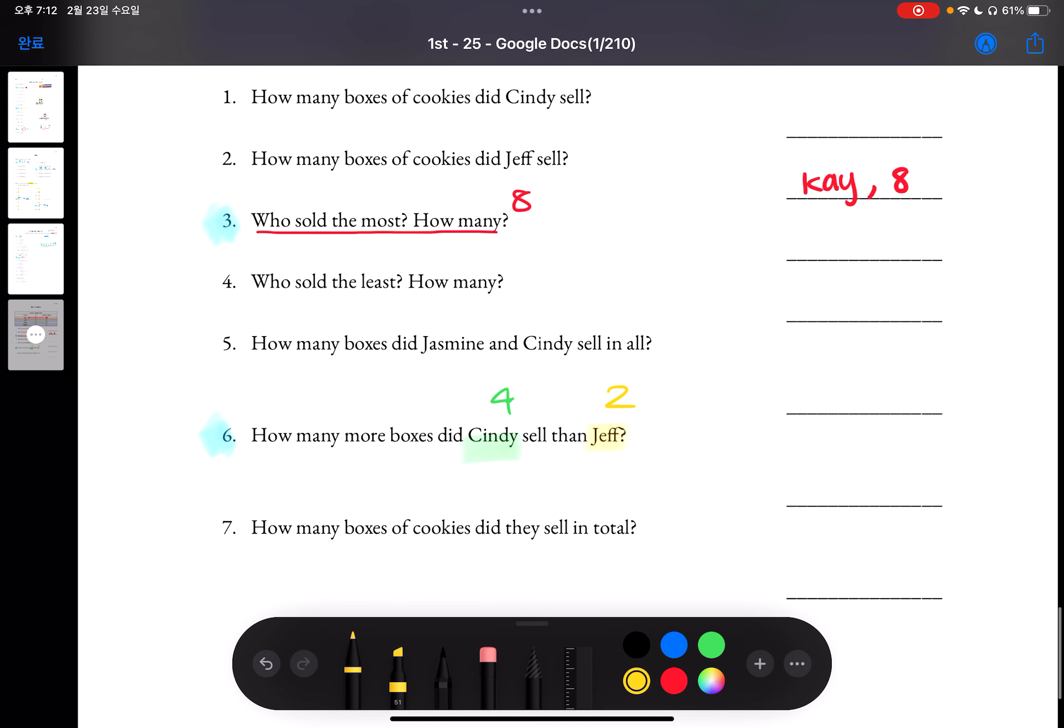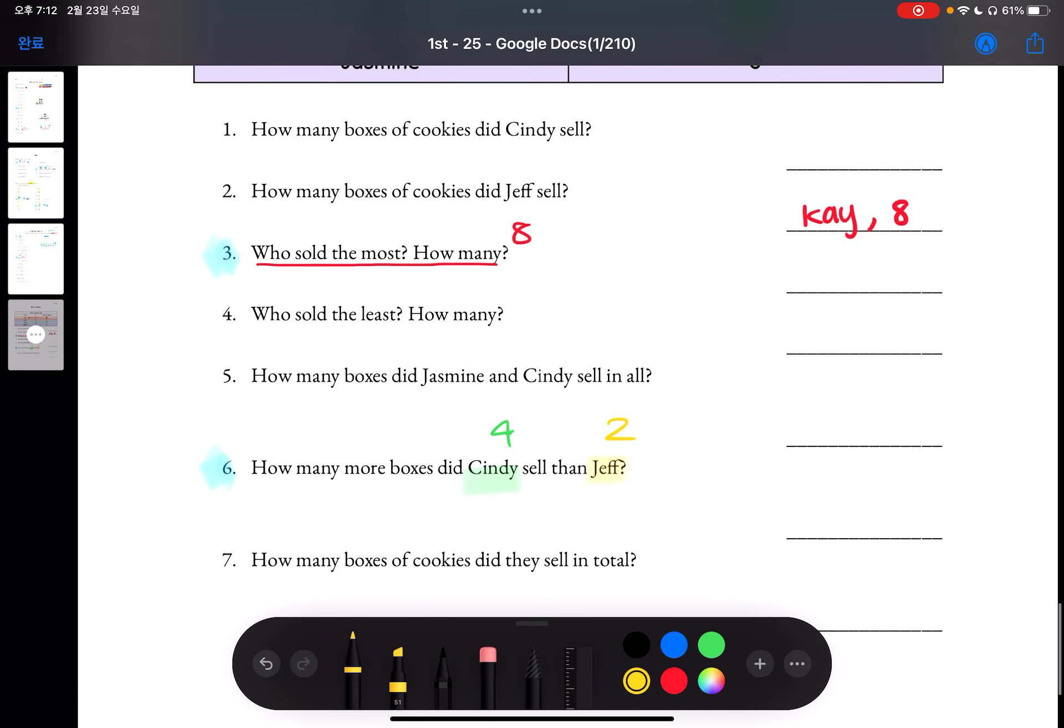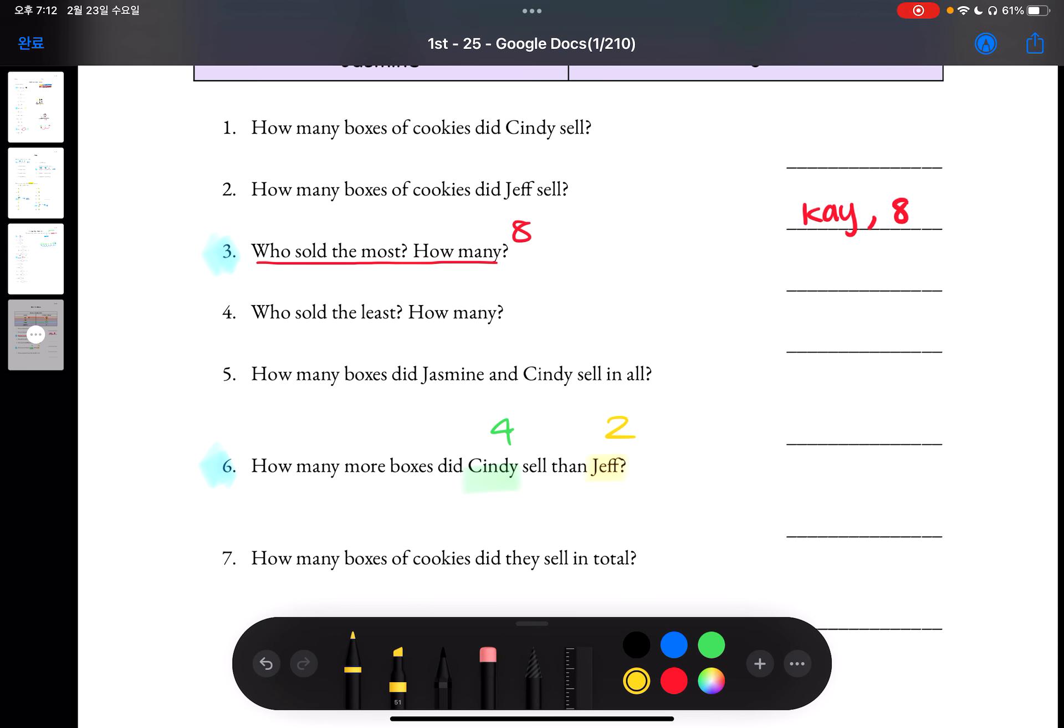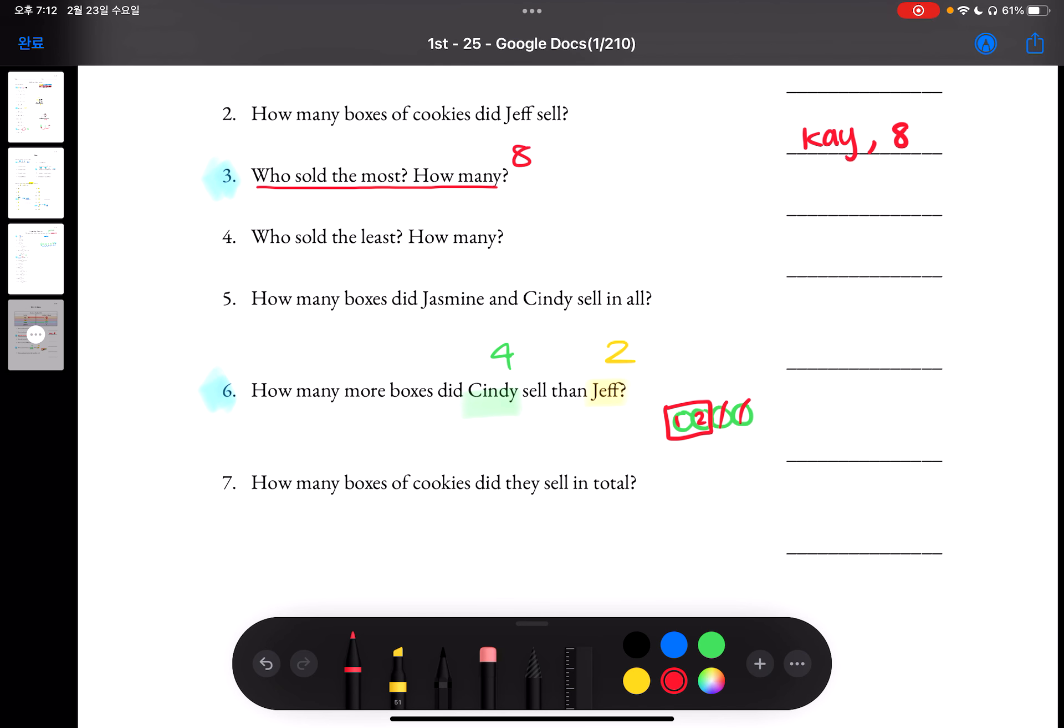So we have to do 4 minus 2 because we have to know how many more boxes of cookies Cindy sold than Jeff. So when we do 4 minus 2, we can use circles. When we subtract 2, we have 2 left. So for the answer, we'll write 2 more boxes.